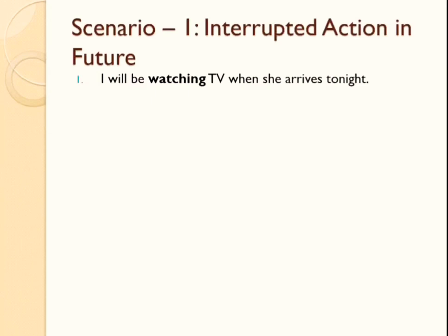The example says: 'I will be watching TV when she arrives tonight.' Two events are going to happen in future — event number one is me watching the TV, and event number two is her arrival. Scenario number one is about actions being interrupted, so assume yourself watching TV and assume someone else's arrival — your watching TV is being interrupted. So if you want to tell someone what you would be doing when she arrives, you use the future continuous tense: 'I'll be watching TV when she arrives tonight.'